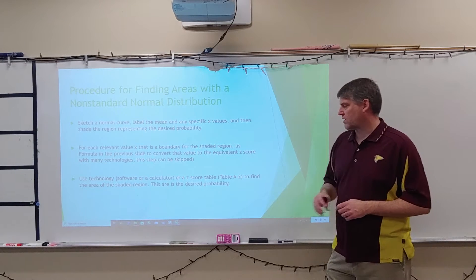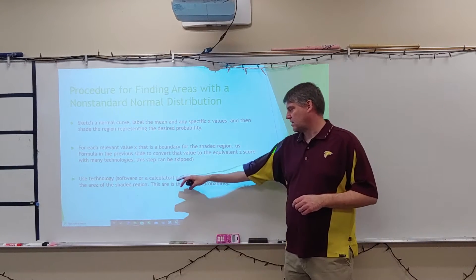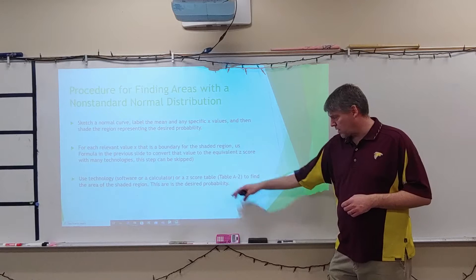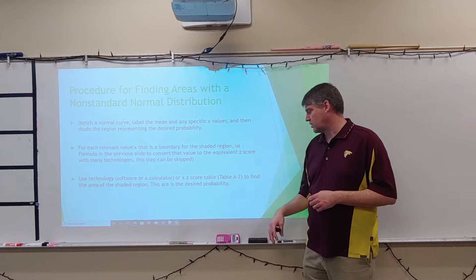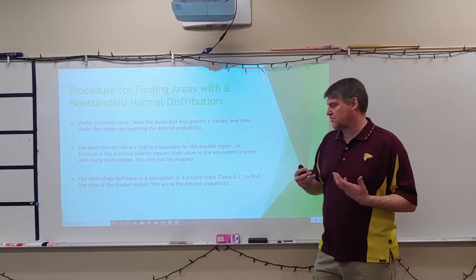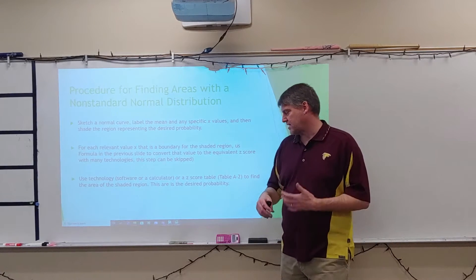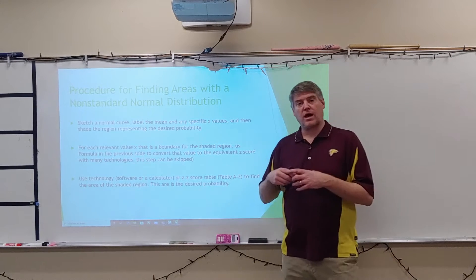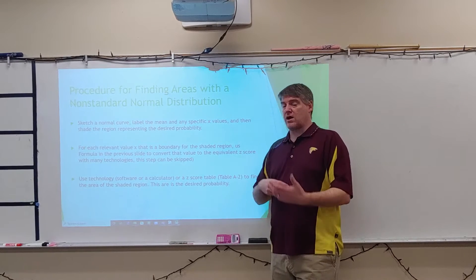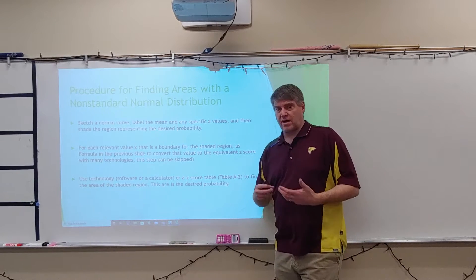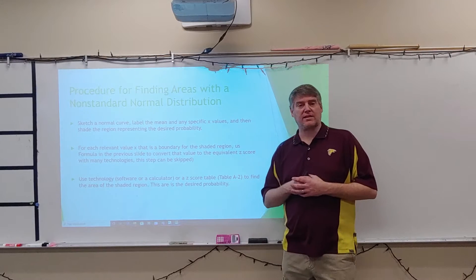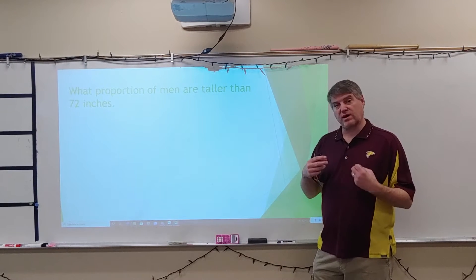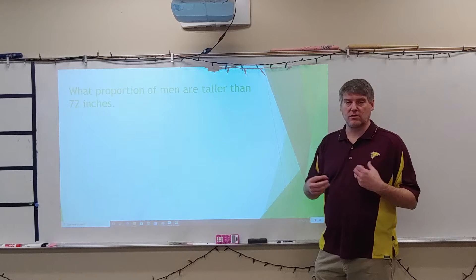Use technology, software, a calculator, or a z-score table — our book has table A2 — to find the area of the shaded region. This area is the desired probability. We talked about how area and probability go hand in hand in the normal curve, and sometimes we have to subtract those areas.